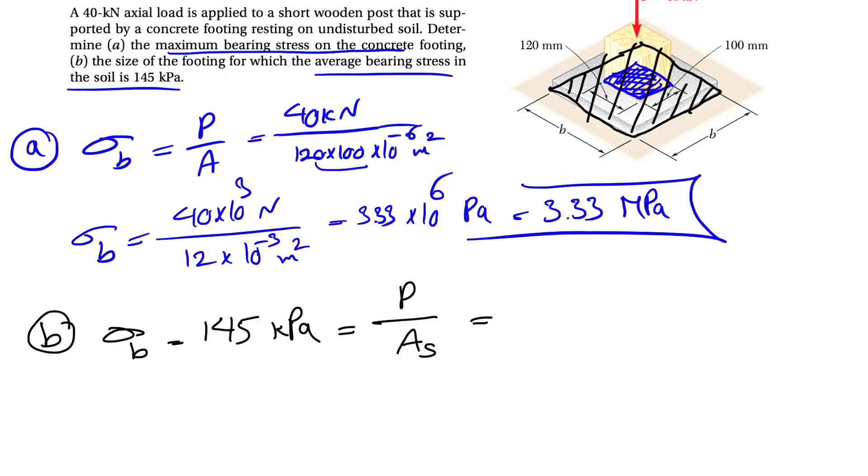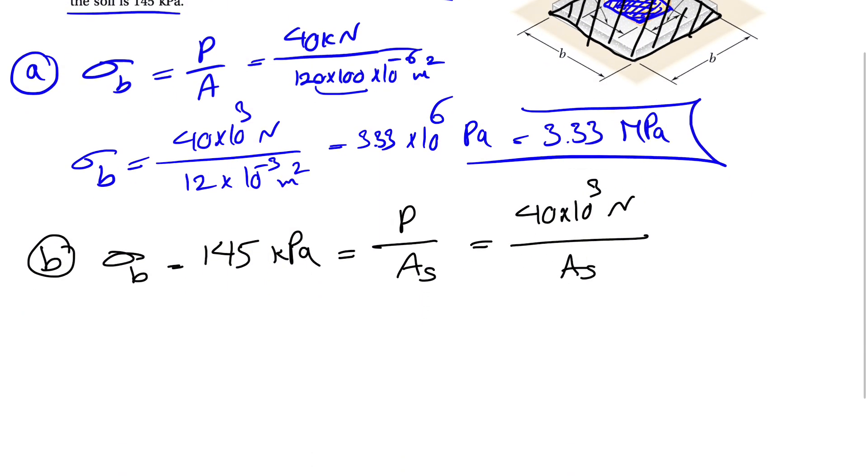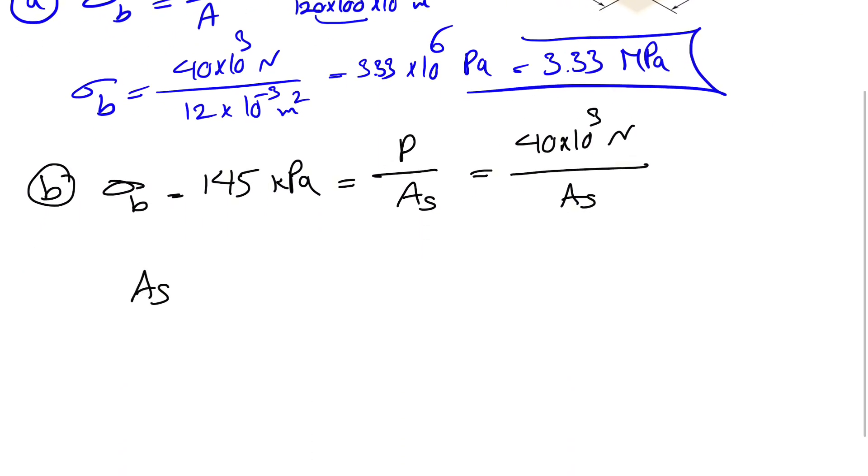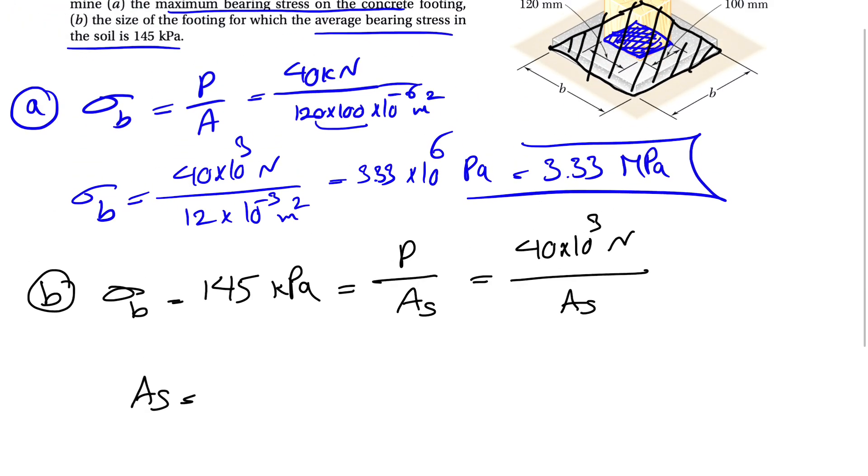And here we know our P is 40, again, times 10 to the 3 to get it in Newtons. And we have to find the area of this soil. So basically, our AS, which we can figure out, we have a square with the side of B, which will be B squared.